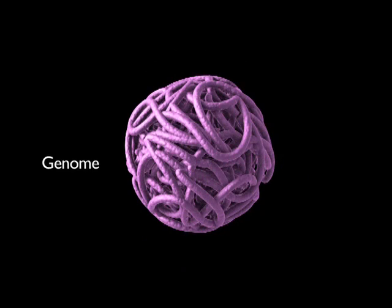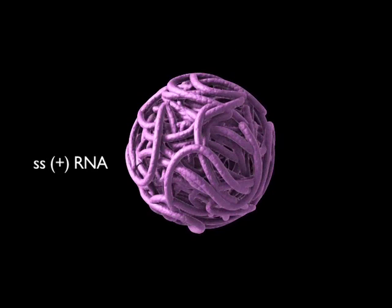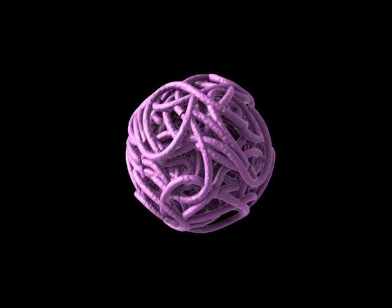The polio genome is a single, positive-stranded RNA molecule and it consists of about 7,440 nucleotides, which means it's a rather small one.